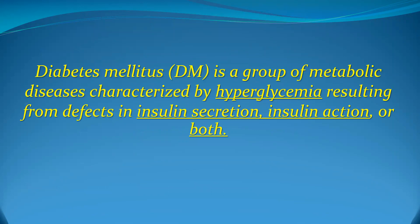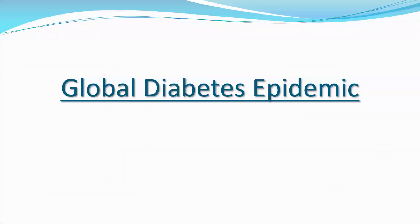It is important that in every disease we understand the basic definition. Diabetes mellitus is a group of metabolic disorders characterized by hyperglycemia. That is why most current guidelines address diabetes as a hyperglycemic disorder. It results from two main things: a problem in insulin secretion, a problem in insulin action, or both.